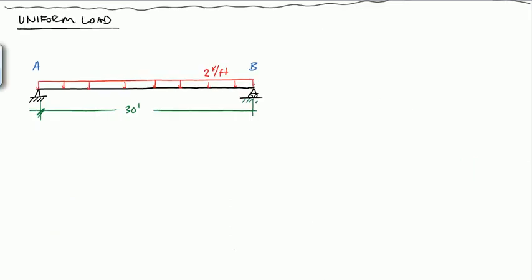For a uniform load, the first thing we need is the reactions. It's helpful to have a free body diagram. We use resultants to find reactions, but be cautioned: when doing shear and moment diagrams, resultants can only be used for the reactions. We must leave the load in its distributed form when constructing the shear and moment diagrams.